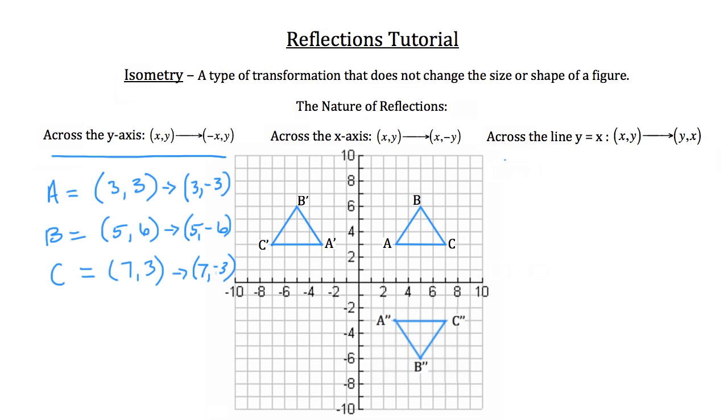So lastly, let's go ahead and reflect that original triangle, triangle ABC, across the line y equals x. And remember, if you were to draw that line y is equal to x, it would look like this red line here, it's just a line cutting through the origin with the slope of 1. So now we're going to reflect triangle ABC across this line. In order to do that, we want to take our original (x, y) coordinate and change it to (y, x). So for A, it was originally (3, 3). We're just going to switch the x and y and it's going to remain as (3, 3). B was (5, 6), so now reflecting across the line y is equal to x, it becomes (6, 5). And lastly, C was (7, 3), so that becomes (3, 7).